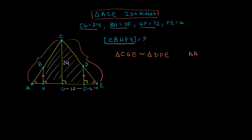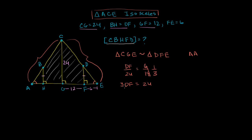We can write that triangle CGE is similar to triangle DFE by angle-angle — one set of corresponding angles congruent, and this angle is in both triangles. So we set up the ratio between sides: DF over CG equals FE over GE. That's DF over 24 equals 6 over 18, which is 1/3. Cross-multiplying gives 3DF = 24, so DF equals 8.